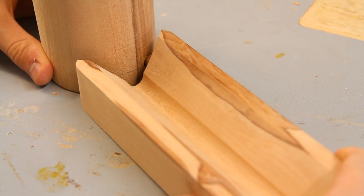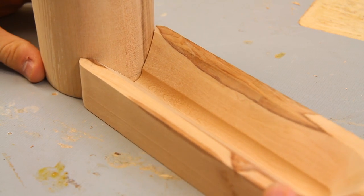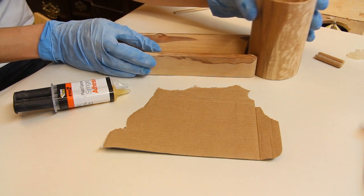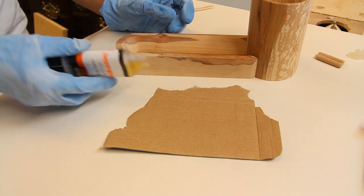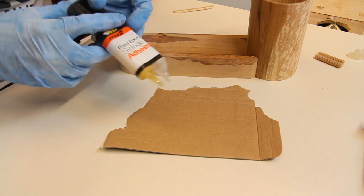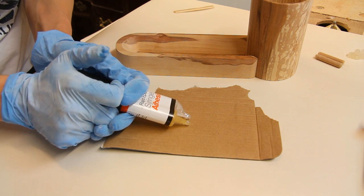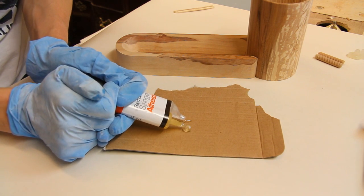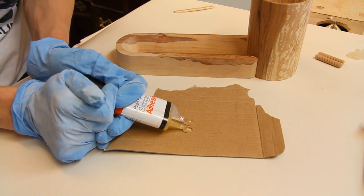Right so those parts just go together like that and now I'm ready to glue them. Because I don't have a super tight joint between the cup and the tray I'm actually going to use some fast setting epoxy to glue the parts together instead of using regular wood glue. And hopefully that will give me a better bond.